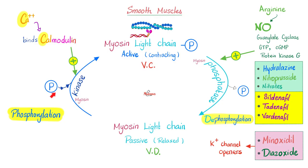The myosin kinase is an enzyme that adds phosphate to myosin. Now the myosin light chain is phosphorylated, which means active. But before adding the phosphate, the myosin light chain was without phosphate — passive, relaxed, and dilated. But once you phosphorylate the myosin light chain, it becomes active, which means contracting and constricting. That's how you contract your smooth muscle.